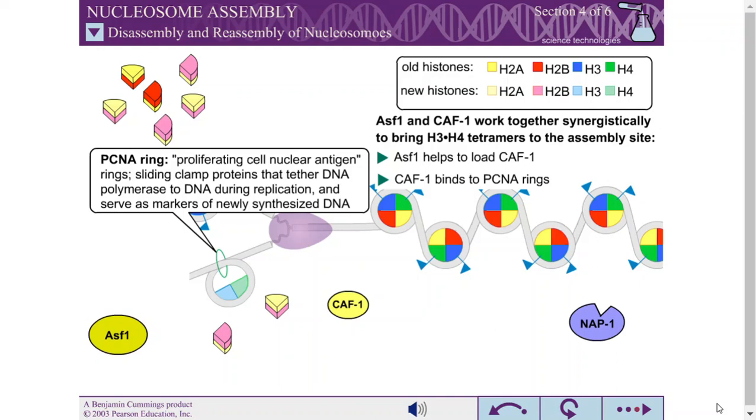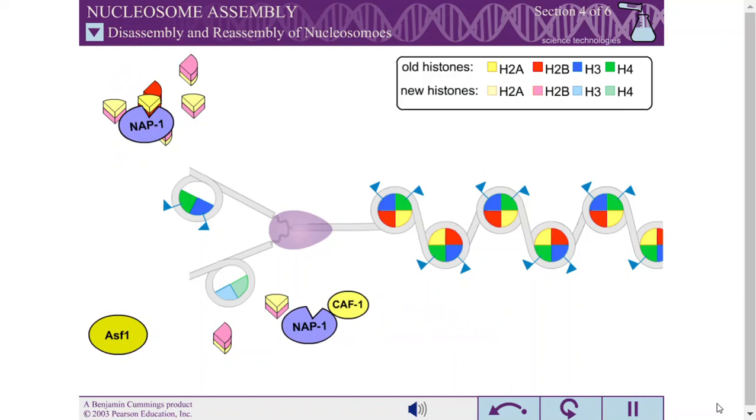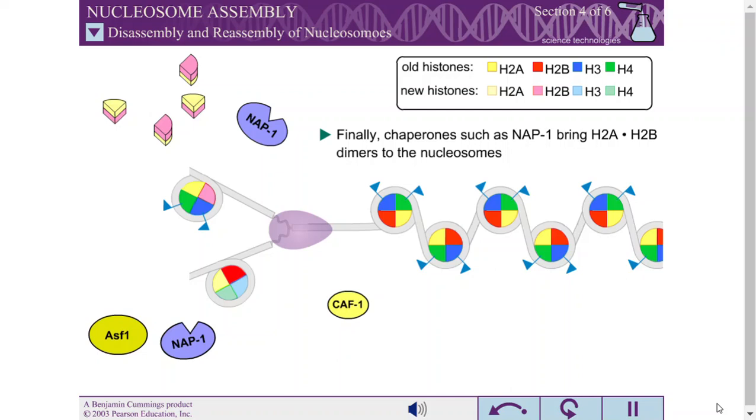The nucleosome is completed by the addition of two H2A-H2B dimers. Although less well understood, this process is undoubtedly mediated by additional chaperone proteins such as NAP1 which is known to bind H2A-H2B dimers.